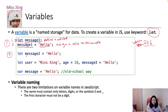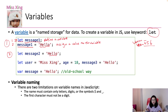The second way is using 'let message2 = hello'. We define a variable and assign a value at the same time — which is done in one statement. And the behavior is going to be the same as the first way.